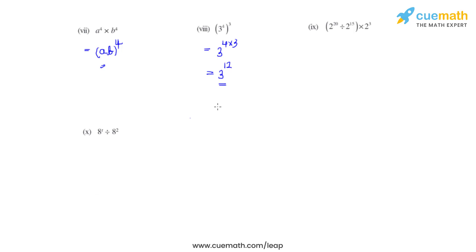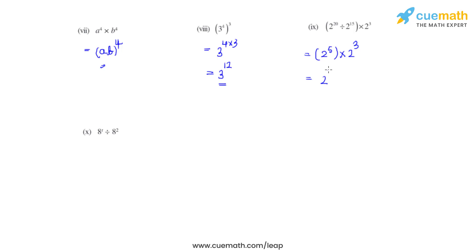In the ninth bit, we first use the quotient law to simplify the terms inside the brackets: 2 raised to 20 minus 15, which gives us 2 raised to 5. This is then multiplied by 2 raised to 3. Applying the product law, we add the powers: 5 plus 3 equals 8, giving us the answer 2 raised to 8.